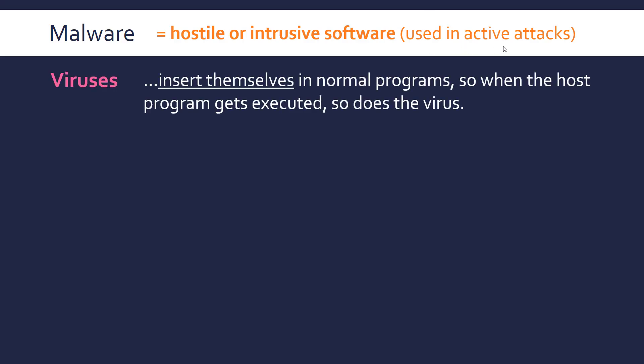We're going to look at the main examples of malware, most of which you would have heard of, though you may not know exactly how they work. Viruses are unique because they insert themselves into normal programs — like a biological virus inserts itself into your body cells, a computer virus inserts itself into the code of a normal program. When the host program gets executed, the virus code runs as well, linking itself to a program on your computer.